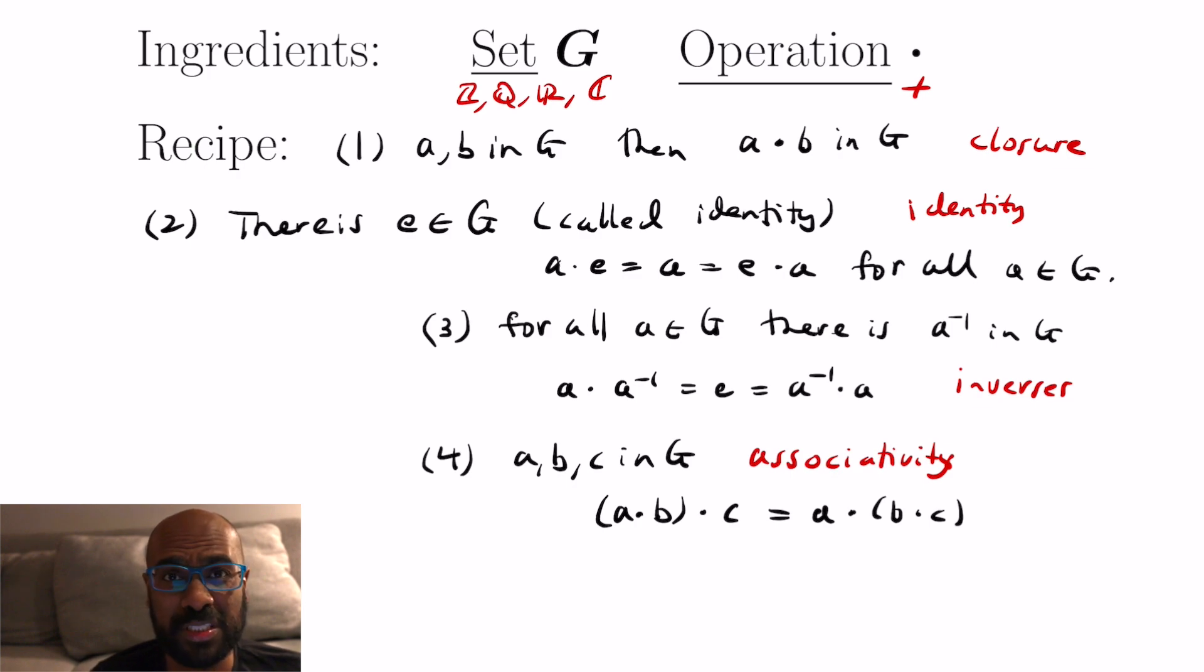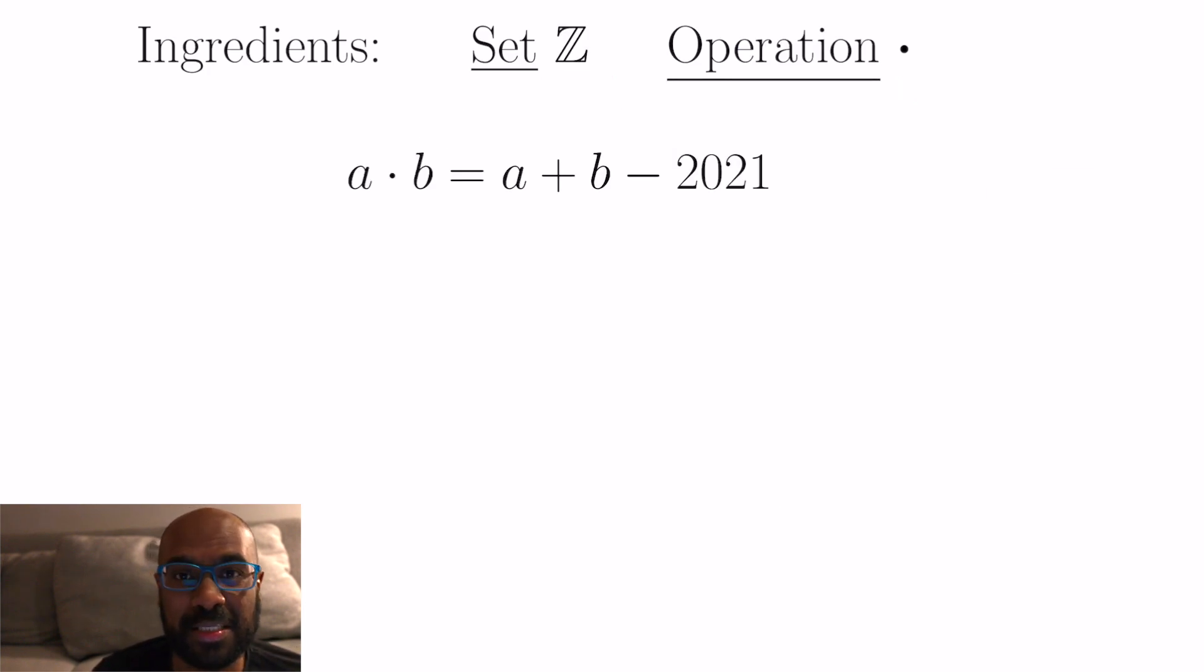But what I want to do is give you examples that actually come up. So the first one is what it feels like to actually do a group theory homework problem. Some of the ingredients here in this particular group are going to be the set being the integers and the operation is this funky operation here where a dot b is a plus b minus 2021. And what we want to do is check that this is actually a group under this operation.